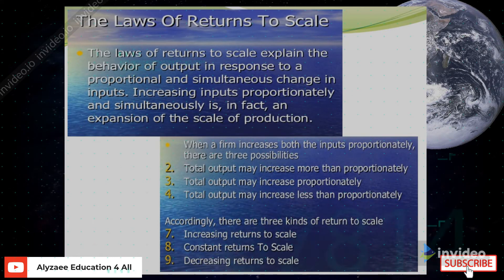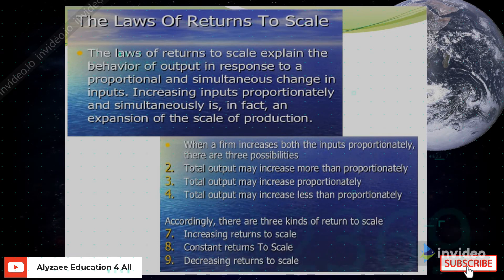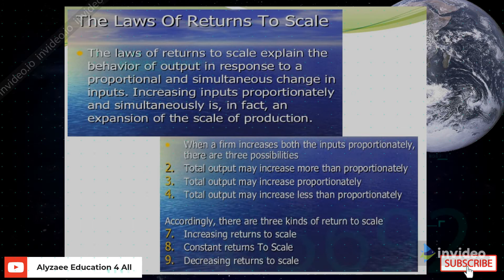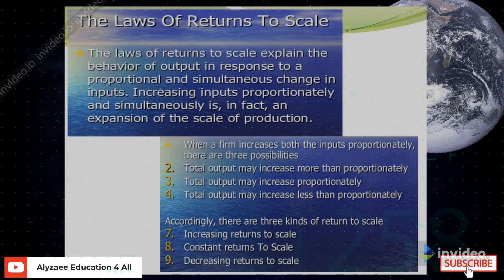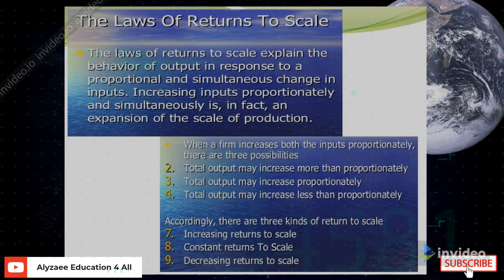The three possibilities are: total output may increase more than proportionately, total output may increase proportionately, and total output may increase less than proportionately. Accordingly, there are three kinds of return to scale: increasing return to scale, constant return to scale, and decreasing return to scale.